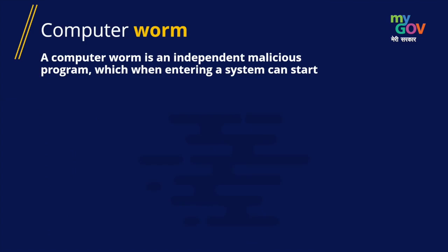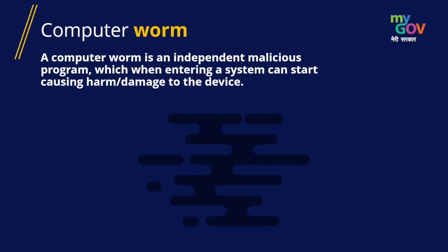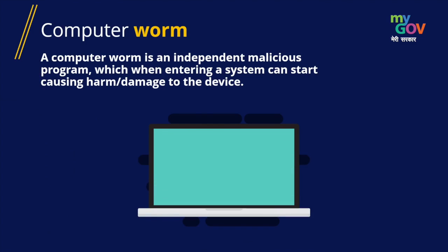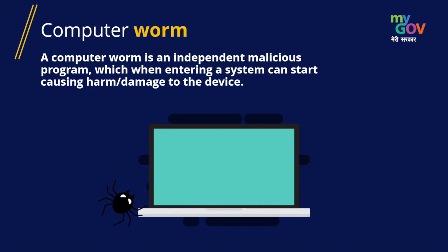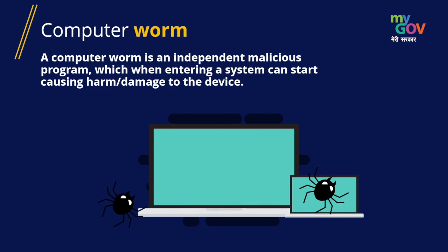A computer worm is an independent malicious program which, when entering a system, can start causing harm or damage to the device. When a worm enters the device, it searches for other connected devices and replicates itself to infect those devices as well.